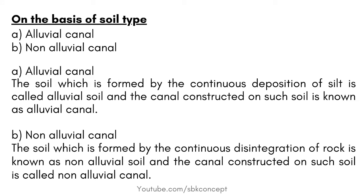On the basis of soil type: Alluvial Canal and Non-Alluvial Canal. The soil which is formed by the continuous deposition of silt is called Alluvial soil, and the canal constructed on such soil is known as Alluvial Canal. The soil which is formed by the continuous disintegration of rock is known as Non-Alluvial soil, and the canal constructed on such soil is called Non-Alluvial Canal.